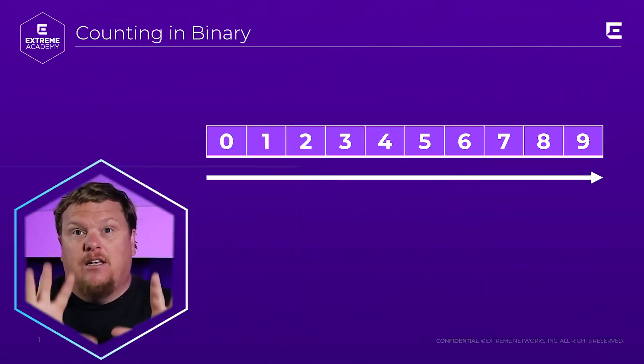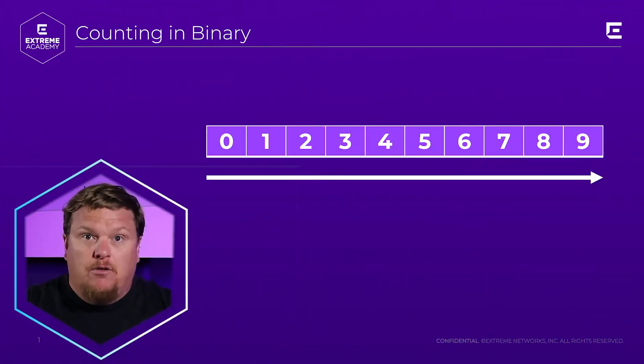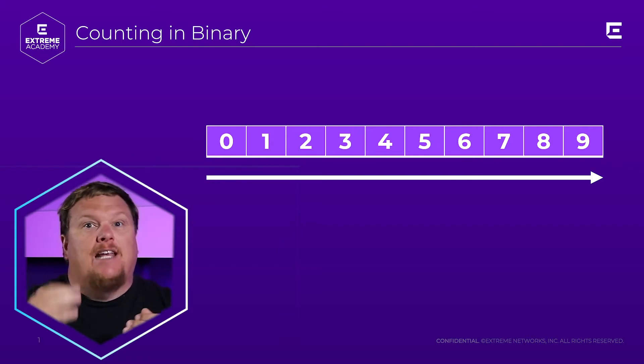One of the things I taught my kids is how to count starting at zero. Why? Because I'm a tech person. So we actually go from zero through nine — that is actually 10 numbers. So how do you do that? You start at zero, one, two, three, four, five, six, seven, eight, nine.